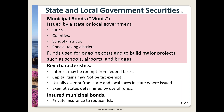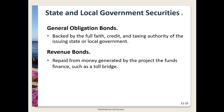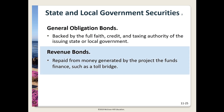Bonds issued by state and local governments are called municipal bonds. They can be issued by states, cities, counties, school districts, or special taxing districts. The main feature is that the interest may be exempt from federal tax, and also from state tax in the state of issuance — making them very attractive to high-tax-bracket investors. Municipal bonds are frequently insured, reducing risk. They are usually one of two types: general obligation bonds, backed by the full faith, credit, and taxing authority of the issuer, or revenue bonds, backed by the revenue generated by the project being funded.